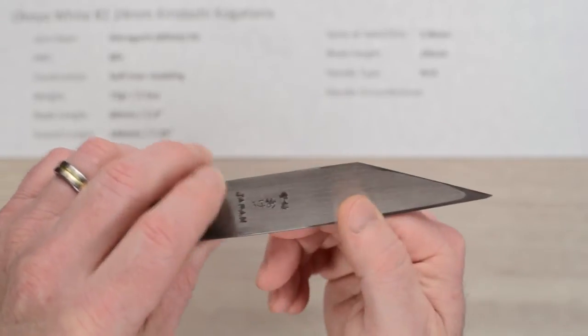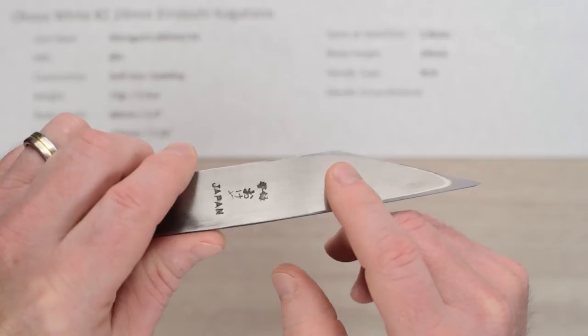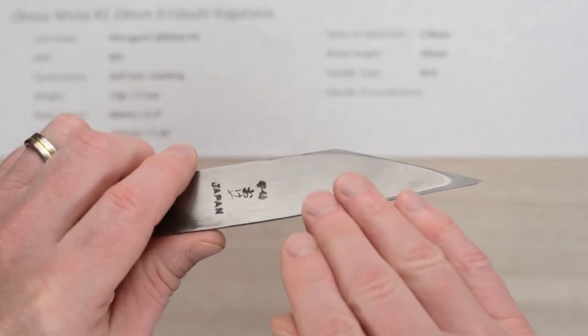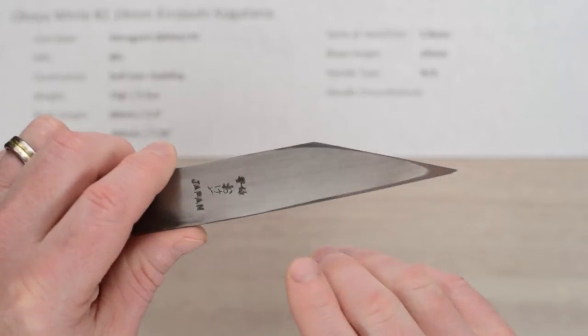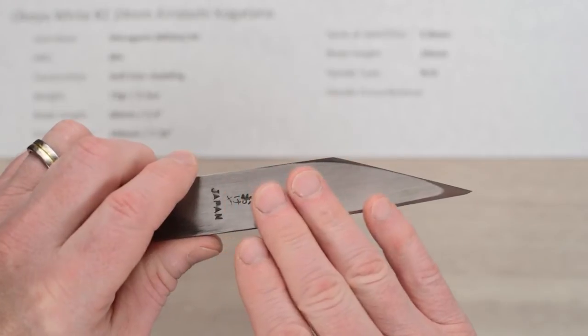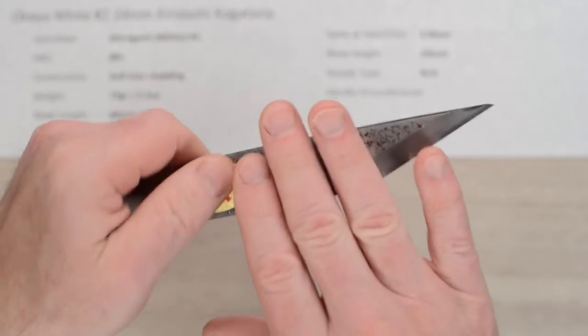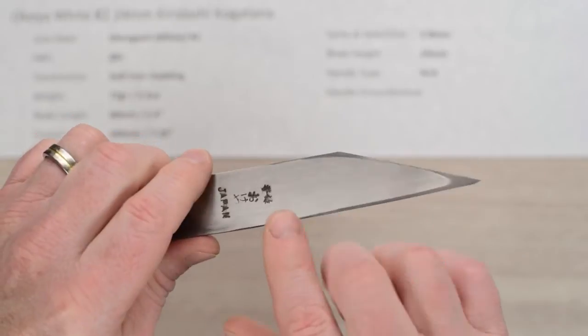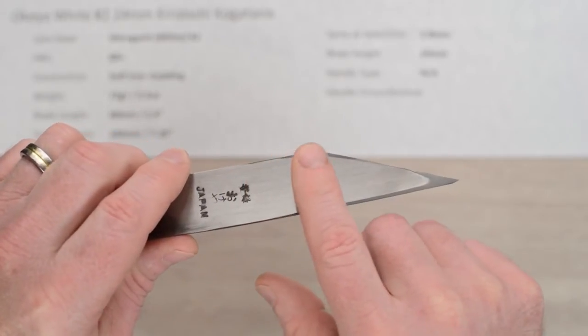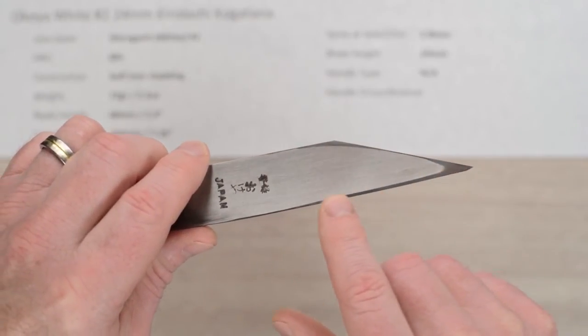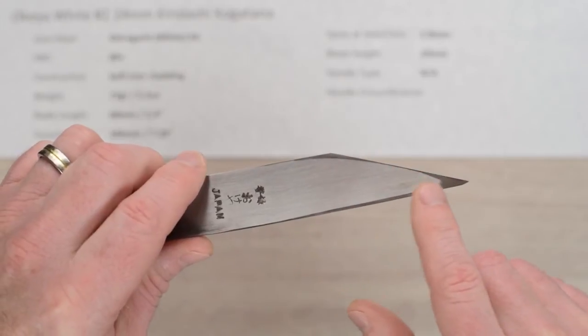I did some sharpening on this and we'll talk about that in a second. This does have a true concave style back known as an Udosuki, and the way you sharpen a single bevel backside is typically you'll lay it completely flat on the stone. As you abrade on the stone, the perimeter steel will get ground down and that's how you take care of the backside.